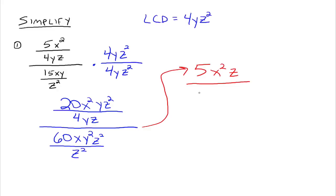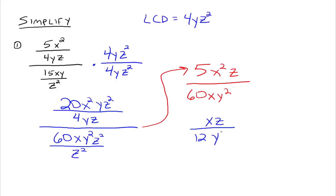Then in the denominator, we have 60xy squared, and the z squared divides out, so your denominator is just 60xy squared. Now you have a rational expression that looks more familiar. So 5 over 60 leaves a 12 in the denominator, x squared over x leaves an x in the numerator, you've got a z in the numerator and a y squared in the denominator. This entire expression simplifies down to xz over 12y squared.